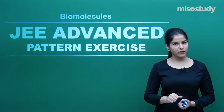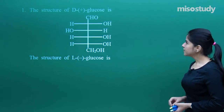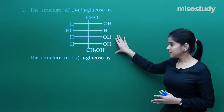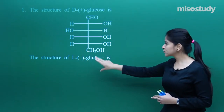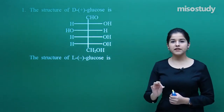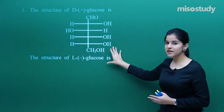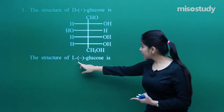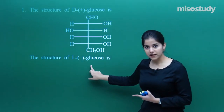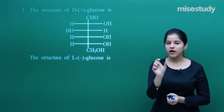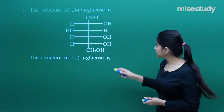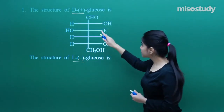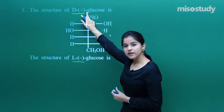Let us start with question number one. The structure of D+ glucose is given here and you need to find out the structure of L- glucose. We have discussed a similar question in mains as well, but there it was asked about L+ glucose, not L-. Here you need to pay attention to what kind of configurations are given — they have given D+ and you need to find out L-.